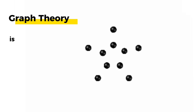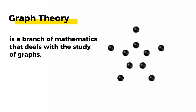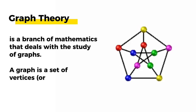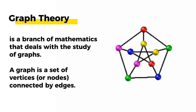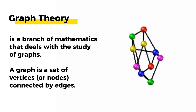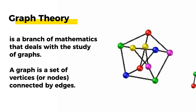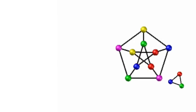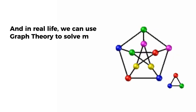Graph theory is a branch of mathematics that deals with the study of graphs. In simple terms, a graph is a set of vertices or nodes connected by edges. In real life, we can use graph theory to solve many problems, including traffic management.